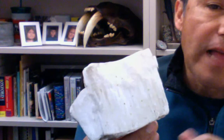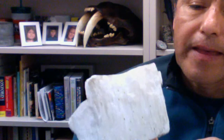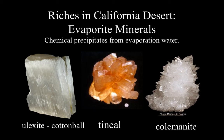Here in my hand I'm holding the mineral ulexite, also called cotton ball. Some of these minerals literally were just lying on the desert floor — you could just pick them up or shovel them into a barrel. The borate minerals are important because boron is an important chemical element with a variety of uses. Most of these borate minerals are either calcium or sodium based. The three I have up here are ulexite, one called tincal which is also known as borax, and then colemanite — so these are all examples of borate minerals.